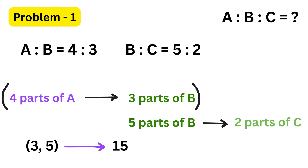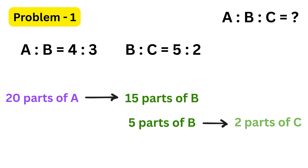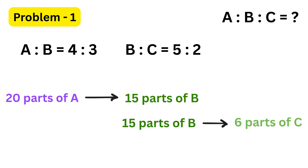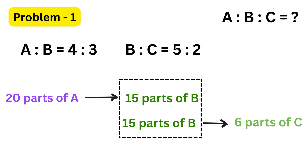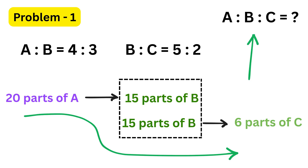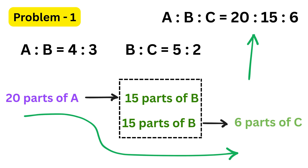To make B equal to fifteen, we multiply the first ratio by five because three times five equals fifteen. This gives us A to B equals twenty to fifteen. Then we multiply the second ratio by three because five times three equals fifteen. This gives us B to C equals fifteen to six. Now both ratios have B equal to fifteen, which means they are ready to be combined. When we combine them, we take A, then B, then C, so we get A to B to C equals twenty to fifteen to six. See, it was super duper easy.